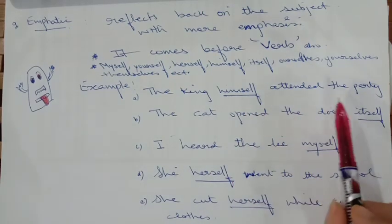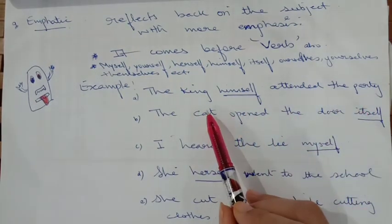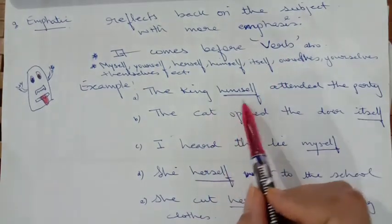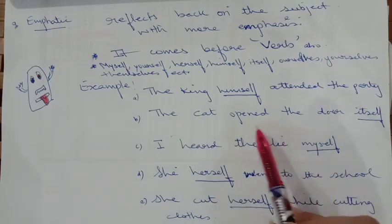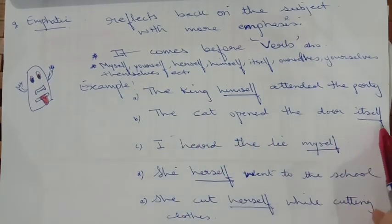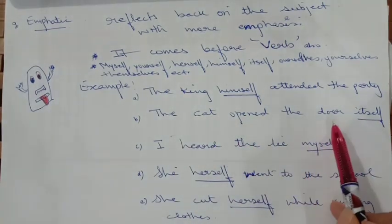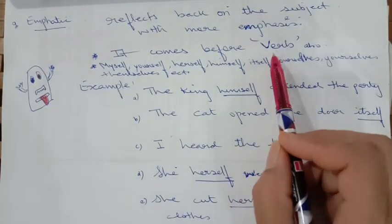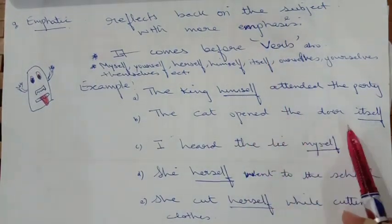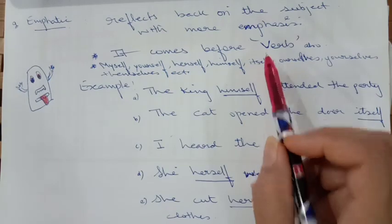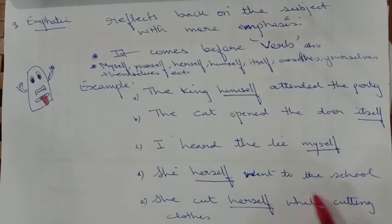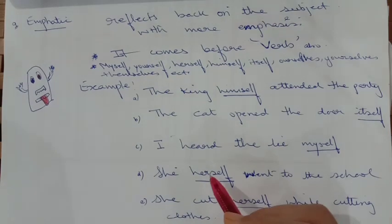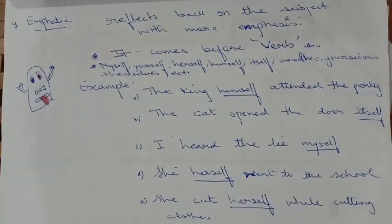Example: 'The king himself attended the party.' It comes before the verb — 'himself' is before 'attended.' 'The cat opened the door itself' — here it comes after the verb, so sometimes it may come after also, but mostly it comes before the verb. 'I heard the lie myself.' 'She herself went to the school.' 'She cut herself while cutting clothes.' These are all your emphatic pronouns.